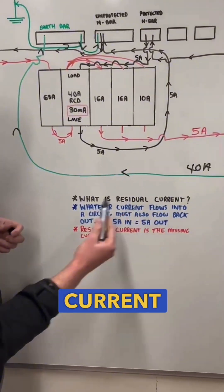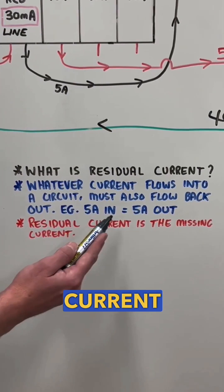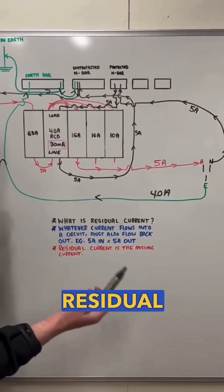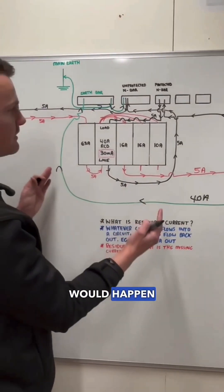And if you want to know what residual current is, residual current is a current that's actually missing. So it's not returning through the neutral, it's coming back through the earth. So that's what residual current is. And that's what would happen under fault conditions.